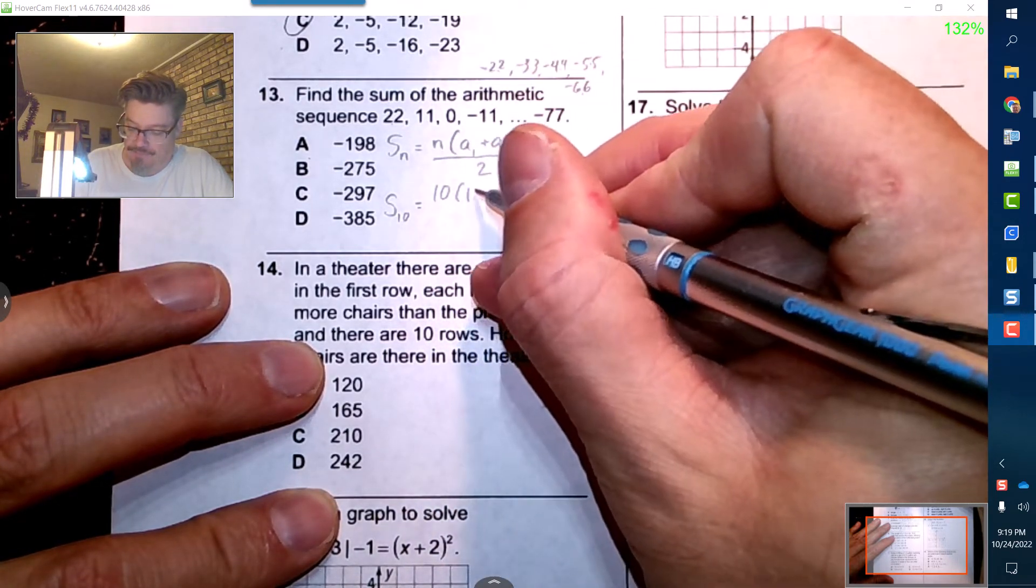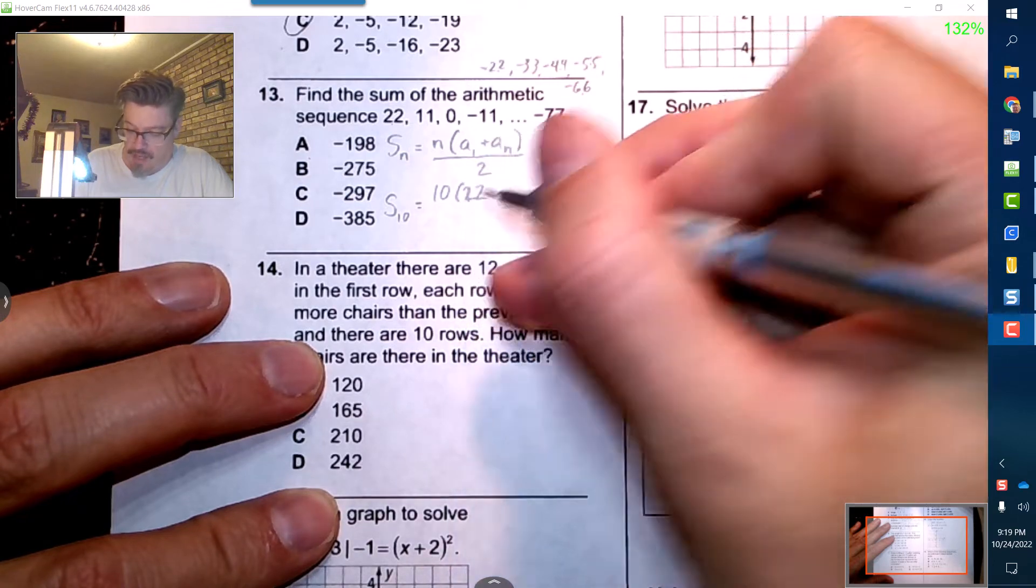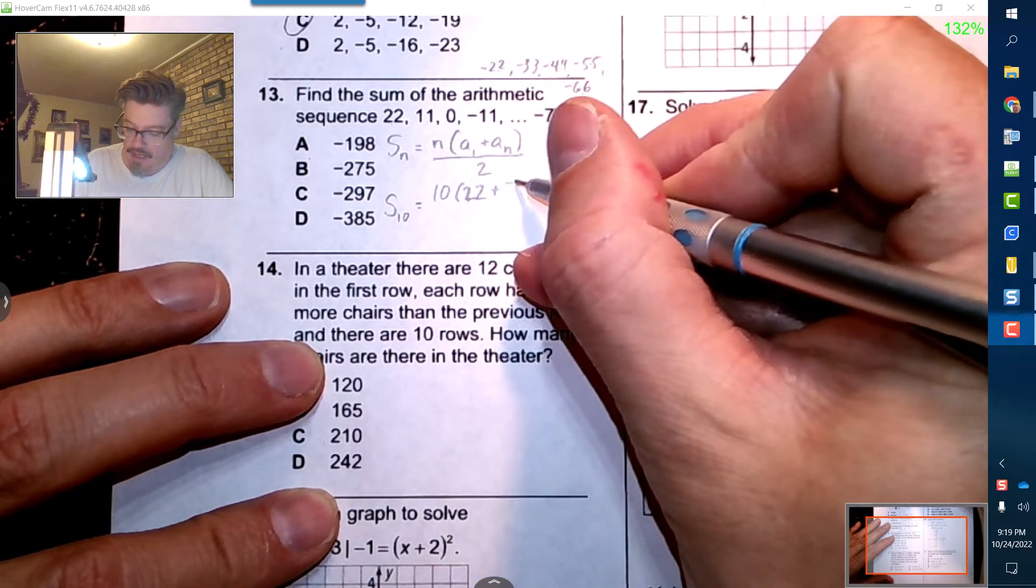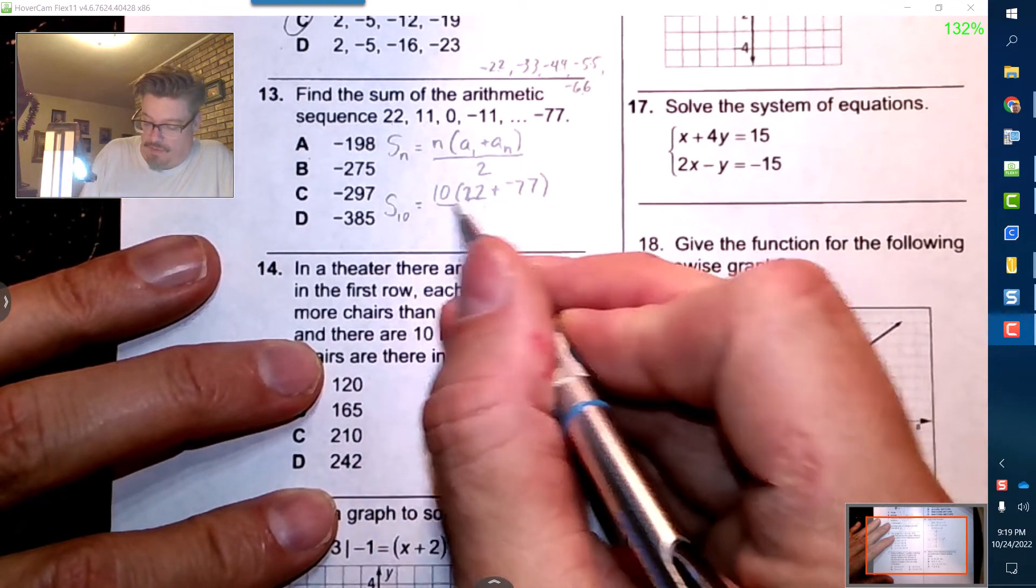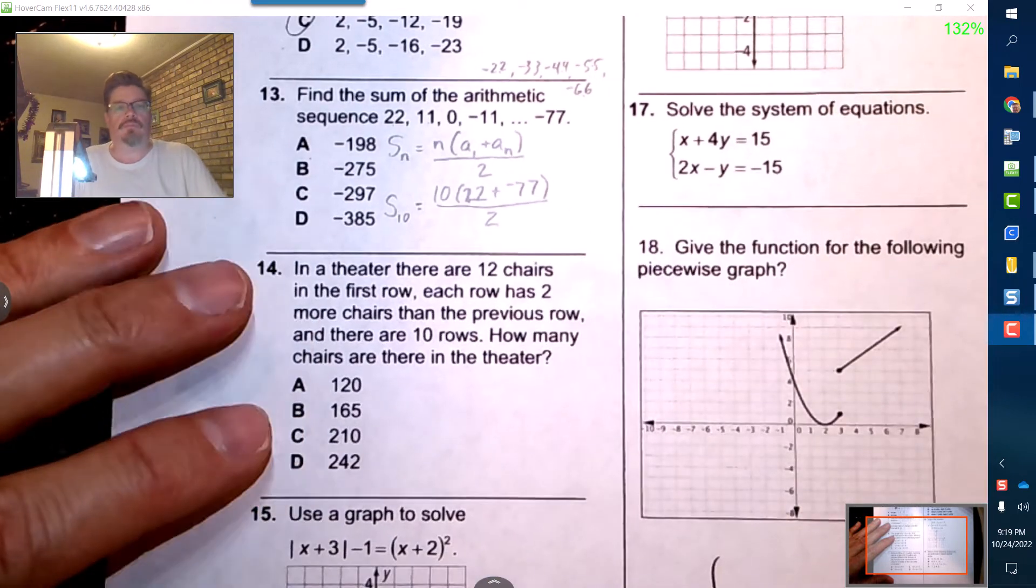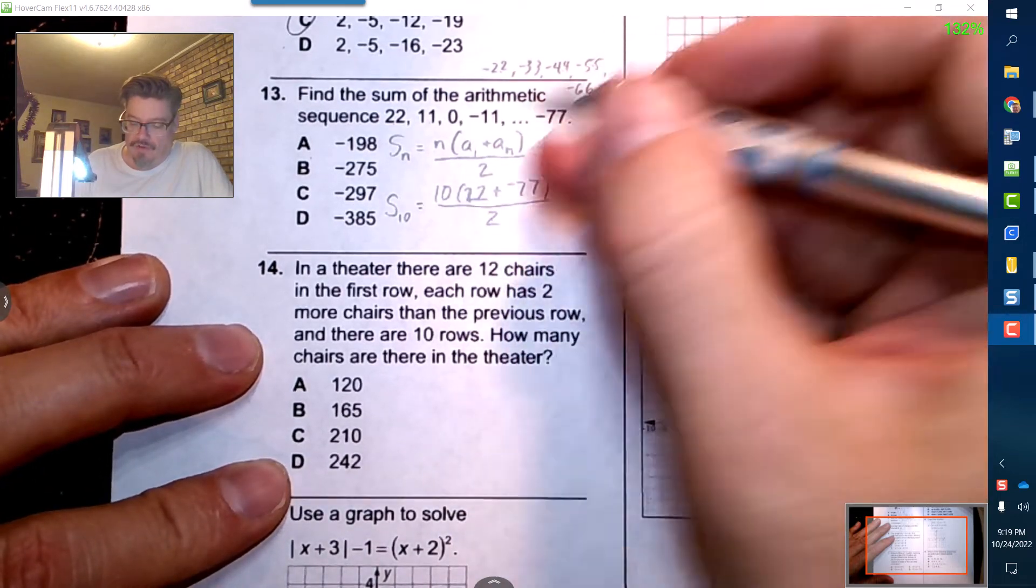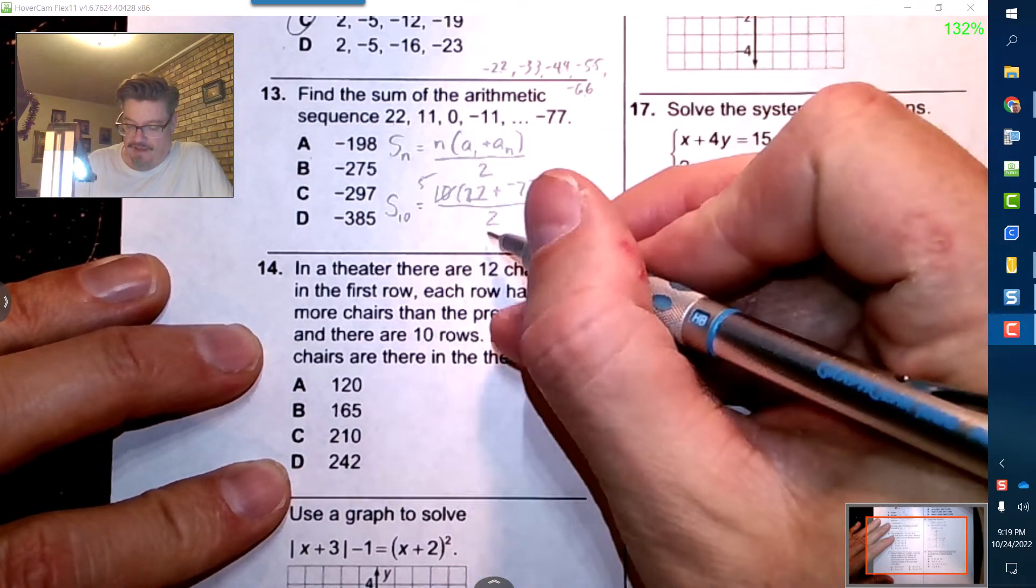We start off with 22 and then we end up with negative 77 and we will divide that by 2. I do know that 10 and 2 are divisible so that's going to be 5, that'll be 1.